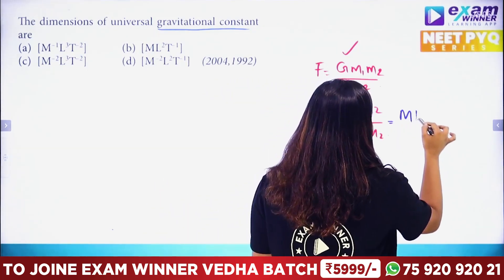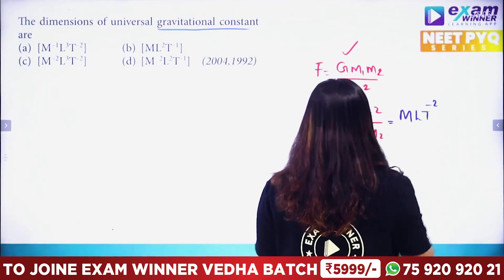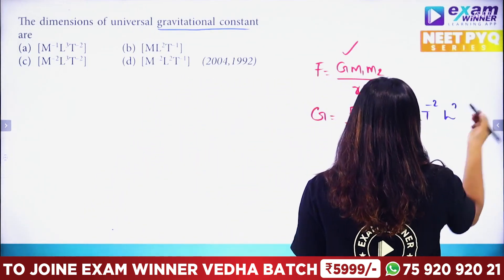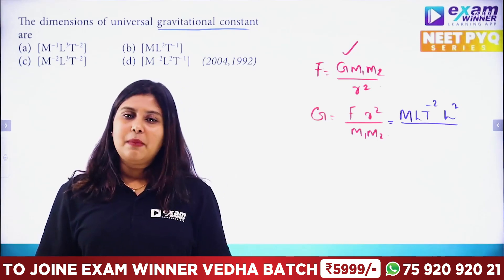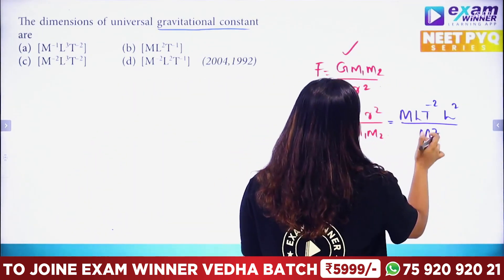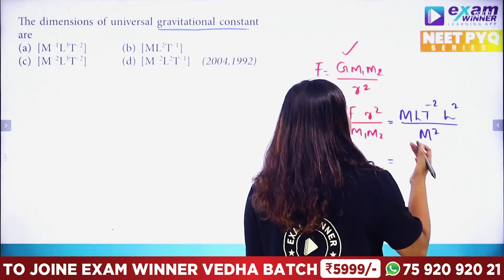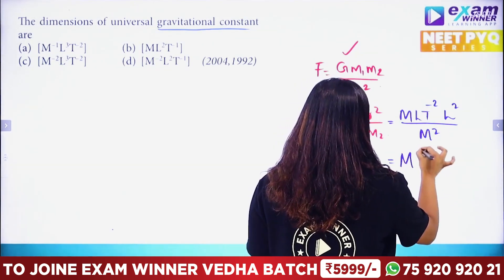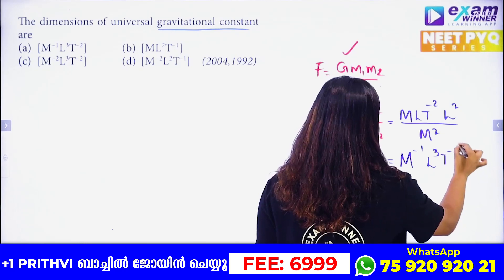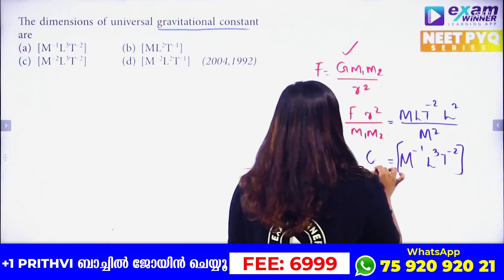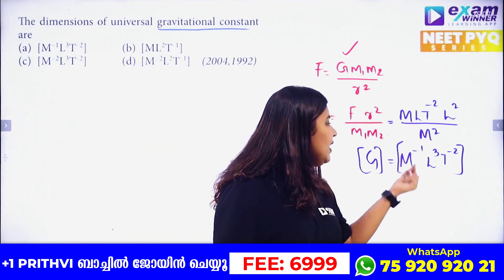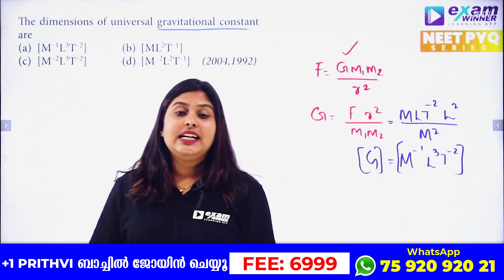The dimension of force is M·L·T⁻². The dimension of radius r is L, so r² is L². Divided by m1 and m2, which is M·M = M². So G has dimensions: M^(1-2) = M⁻¹, L × L² = L³, and T⁻². Therefore the dimension of G is M⁻¹·L³·T⁻².